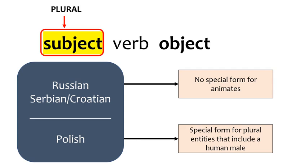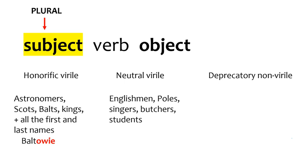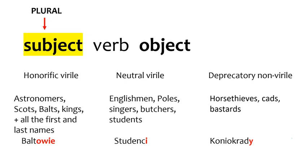Believe it or not, this is not even the full story. Polish plural subjects have a three-way distinction. The honorific virile is reserved for nouns like astronomers, Scots, Balts, kings, plus all first and last names — for example Bałtowie (Balts, the denizens of the Baltic states). Then there is the neutral virile, with examples like Englishmen, Poles, singers, butchers, and students — for example studenci. Finally, there is deprecatory non-virile, which is used for horse thieves, cads, bastards, and a range of unpleasant slurs — for example końokrady (horse thieves).